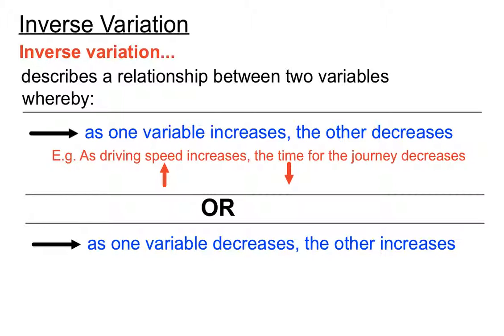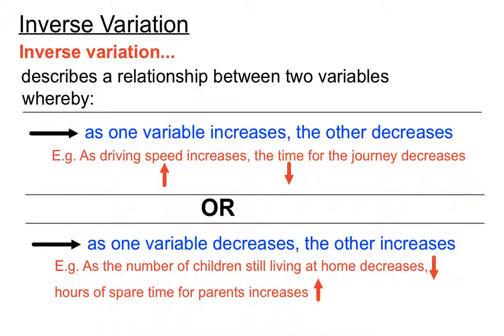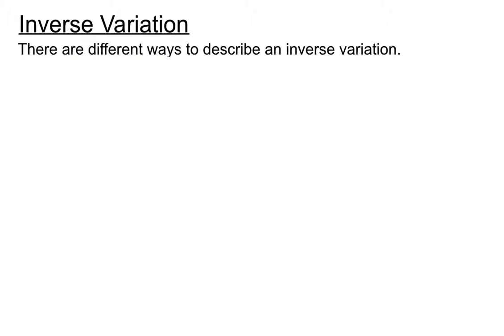Or we could have one variable decreasing and the other variable increasing. A cheeky example from a parent's perspective here is as the number of children still living at home decreases, the hours of spare time for their parents might increase.